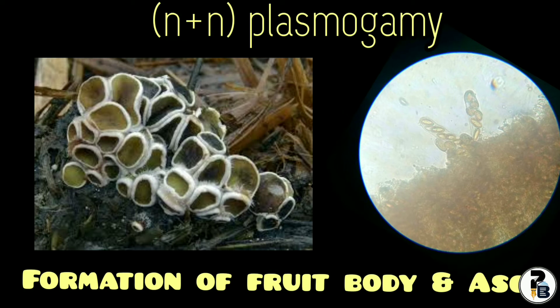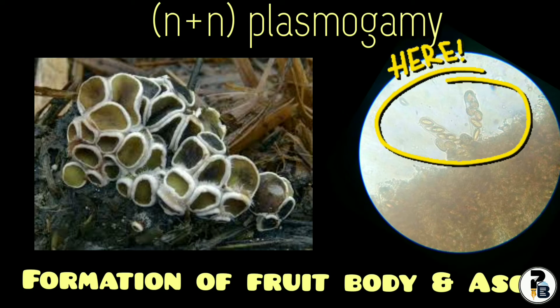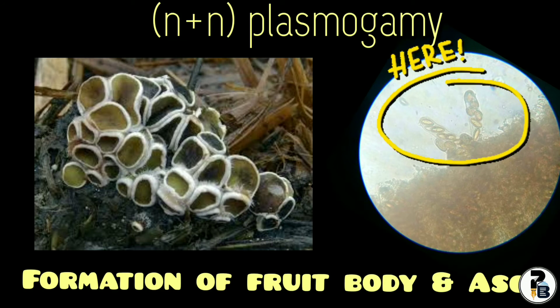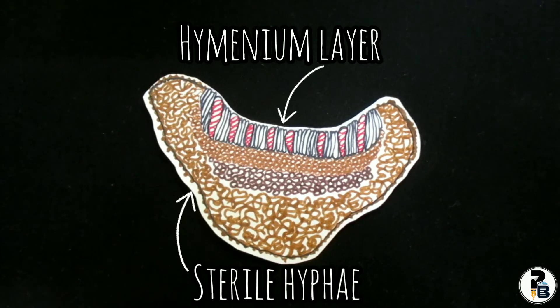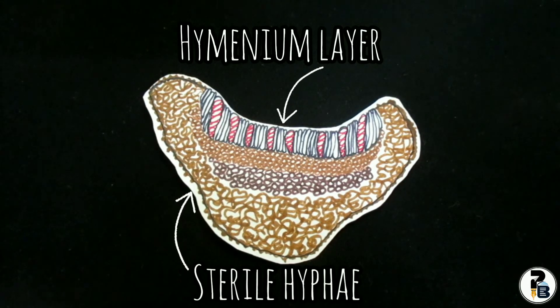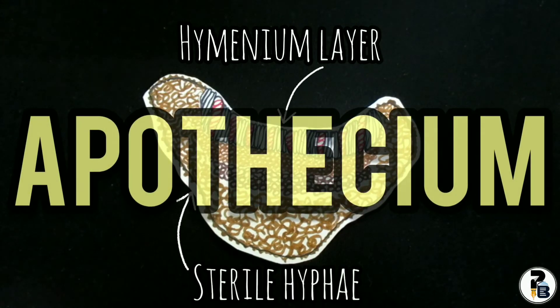The two nuclei undergo fusion within the ascus mother cell — that is the penultimate cell — forming a diploid nucleus. The diploid nucleus divides thrice, the first division being reductional. As a result, eight haploid nuclei are formed, which when surrounded by cytoplasm constitute ascospores. While the formation of asci and ascospores takes place, some vegetative hyphae grow upwardly surrounding the sex organs and form a compact fleshy, cup-shaped fruiting body also known as the apothecium.